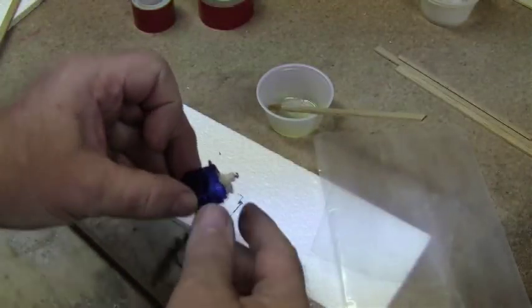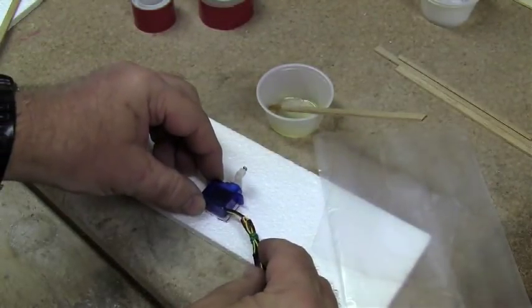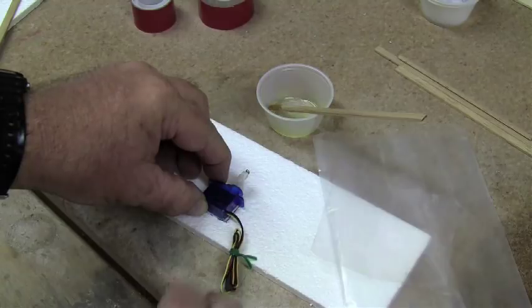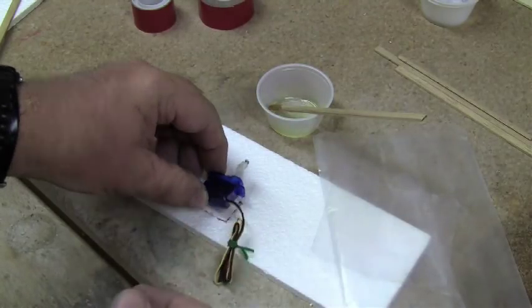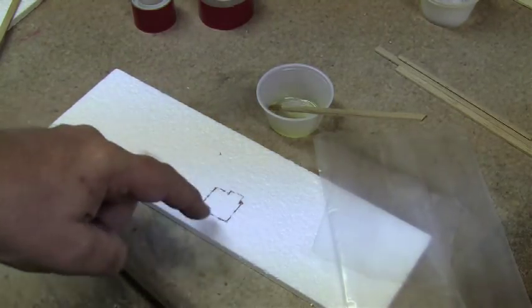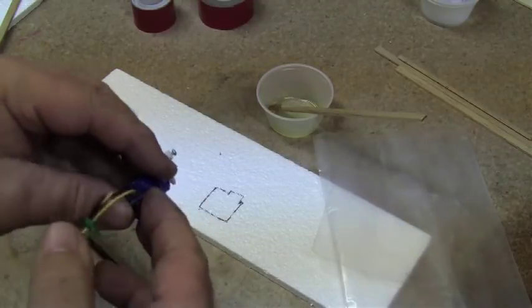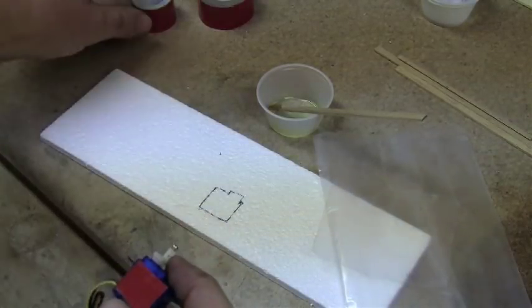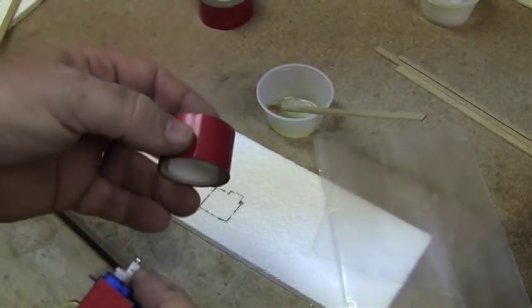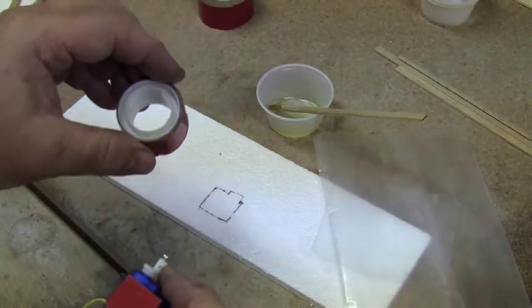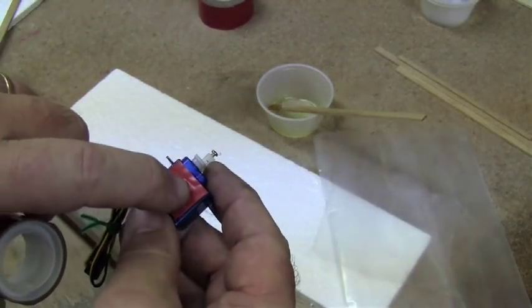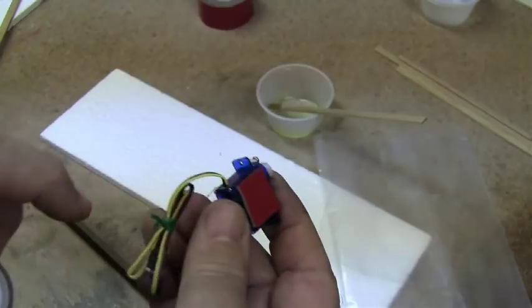The first thing you want to do is place your servo into the position where you want it on the foam and mark around it with a marking pen. Then take some of the tape that we talked about, cut it into a little square, and put it right onto the servo itself.